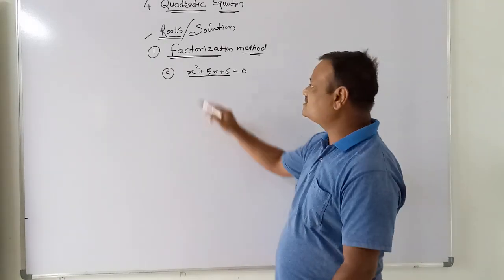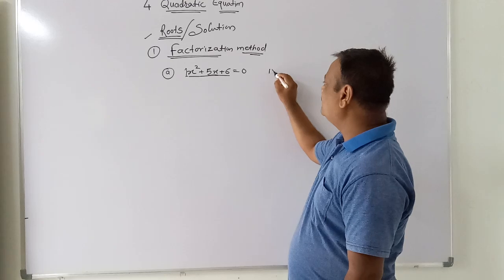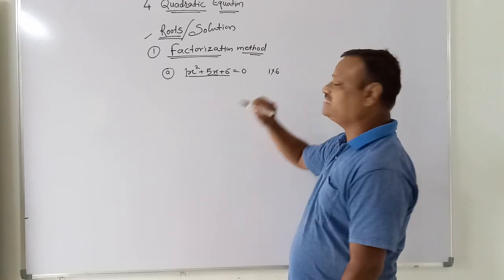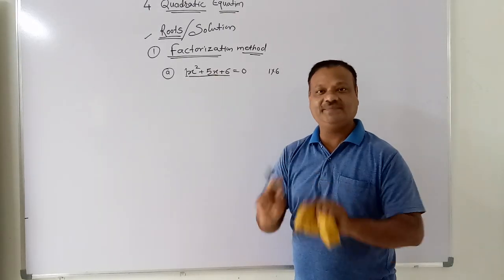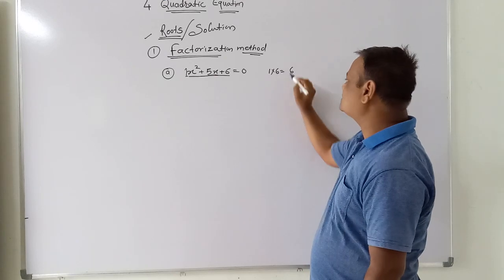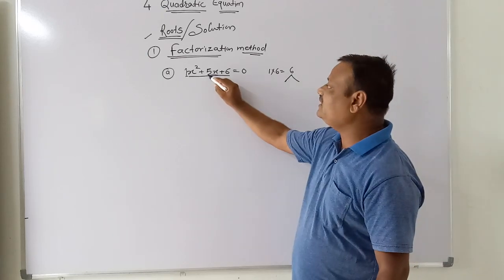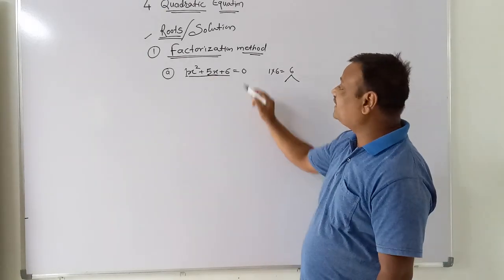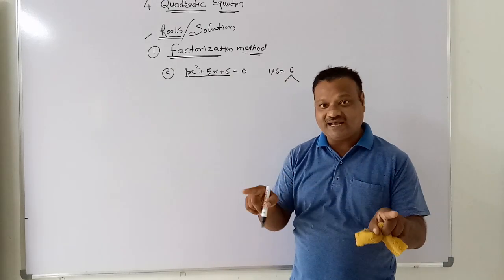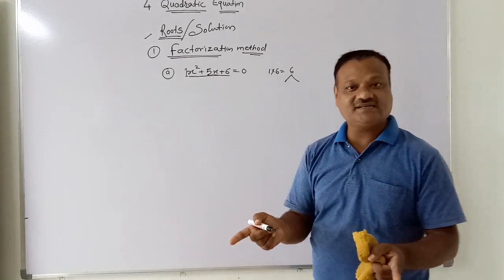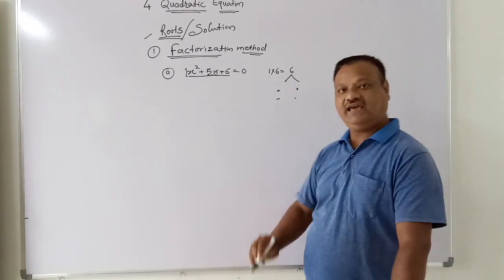How can we find this? The coefficient of x² is 1, so we multiply 1 by the constant coefficient, that is 6. Now we can find the factors of 6 such that their addition is +5. We need to know that both factors of x² are positive — both factors are either negative or both positive. Both factors are positive or negative.